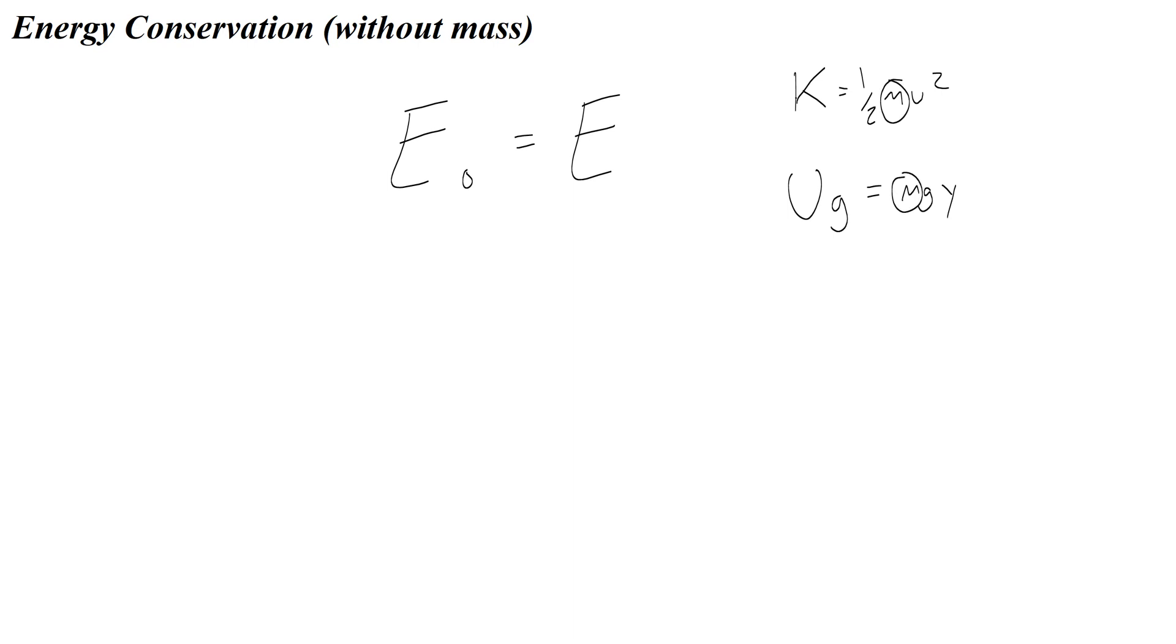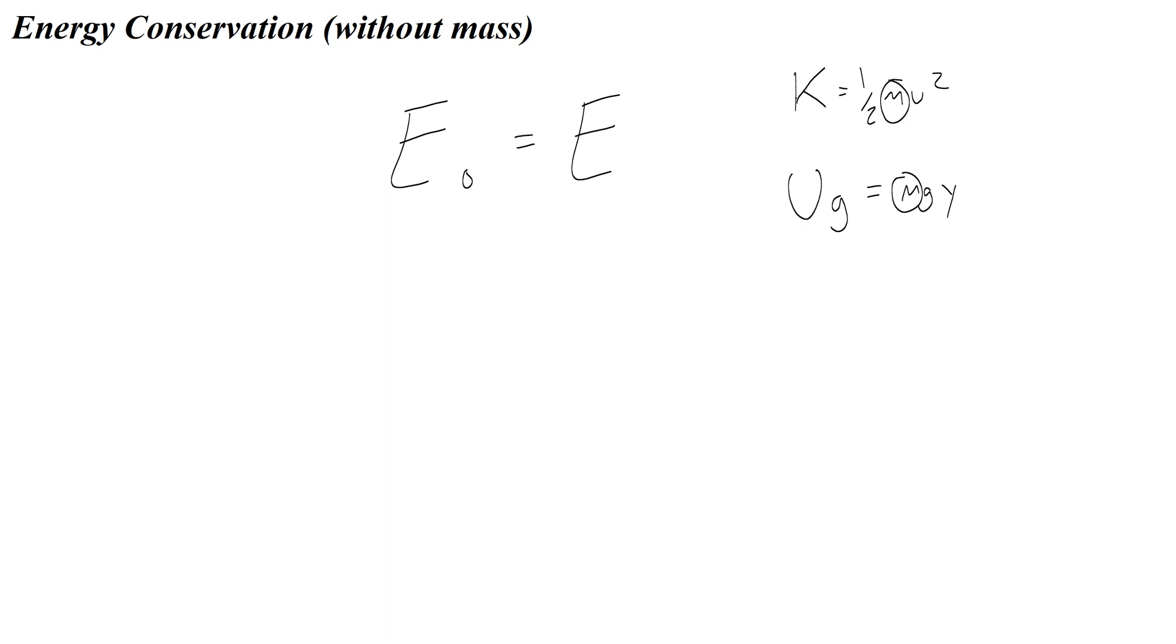You'll notice that both of these things have mass in it, so whenever we set a kinetic energy or potential energy equal to some initial or final energy, there's going to be mass in every equation, and I can get rid of it. Let's see how that works for an example.